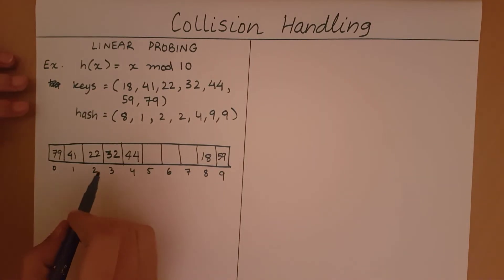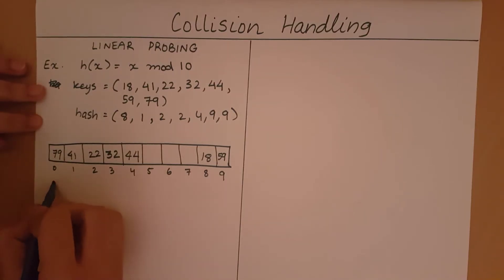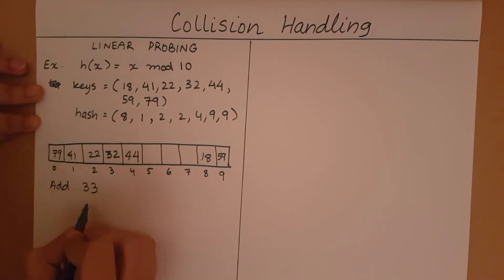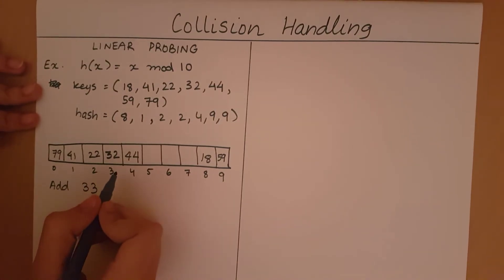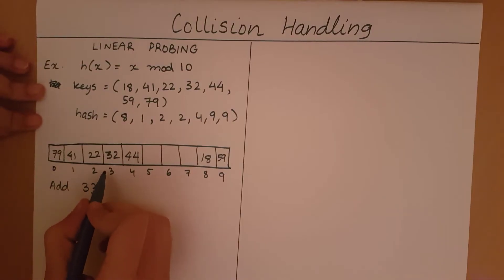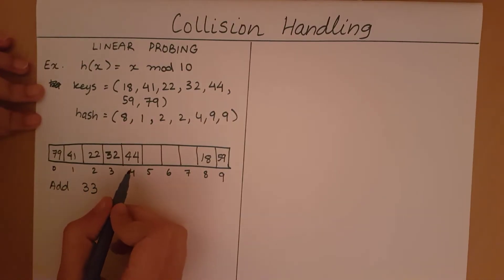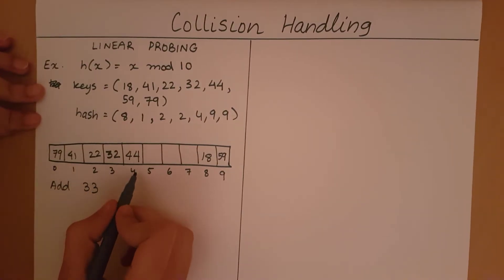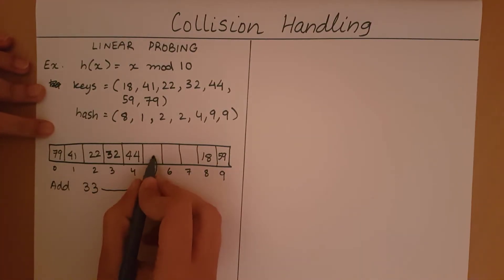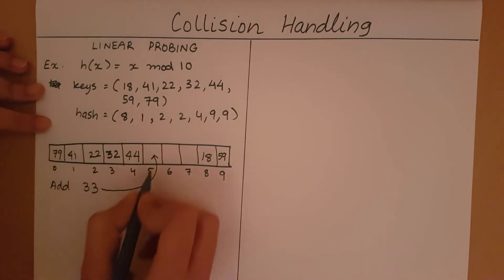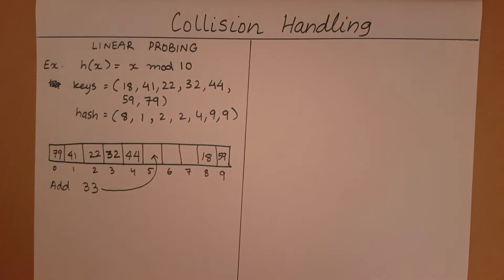Let's take another small example. Say I want to add 33. The hash value of 33 is 3, but index 3 is full. So we go to index 4 — index 4 is also full. So we go to index 5, and 33 is added here. That's just a supplementary example.